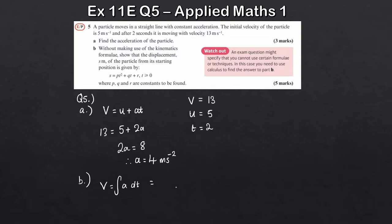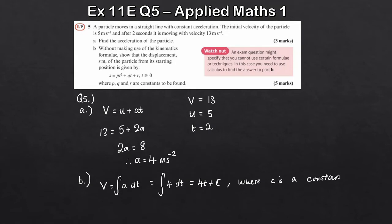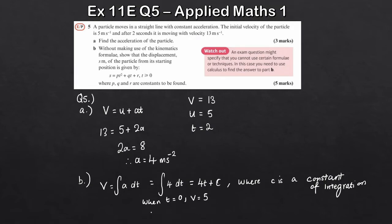The velocity is equal to the integral of the acceleration with respect to t. So integrating 4 with respect to t gives us 4t plus c, where c is a constant of integration. We know that when t equals zero, v equals 5 — our initial velocity. Substituting in: 5 equals 4 times 0 plus c, so c equals 5. Therefore the velocity is v equals 4t plus 5.